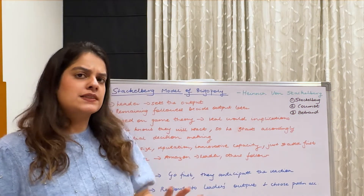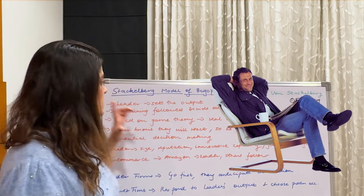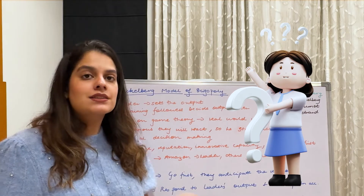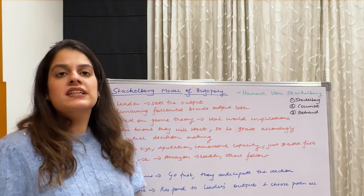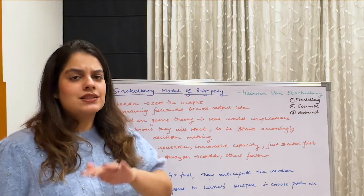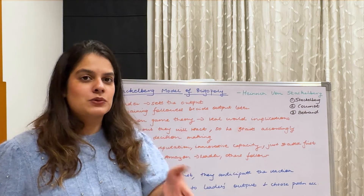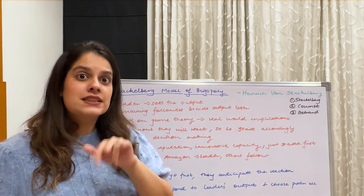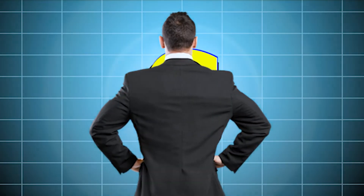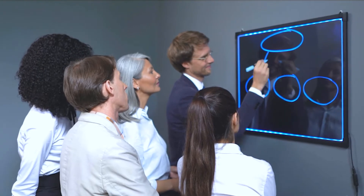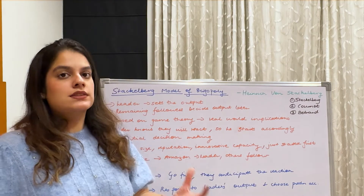In this model we have one leader who sets the output first, and then others called followers decide their output later, based on what the leader has done. You might think the followers are at an advantage, but here it's the other way round. The leader is smart — he knows that once he starts, others are going to follow. So he decides his output and pricing very smartly, because he can foresee how people will react.